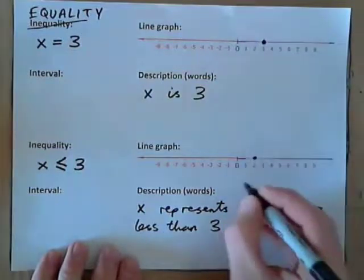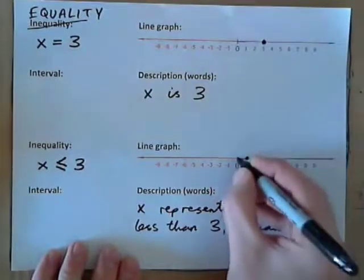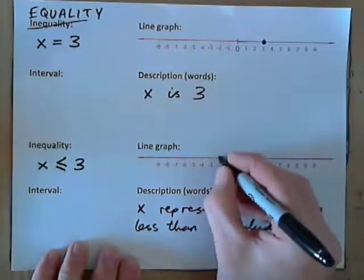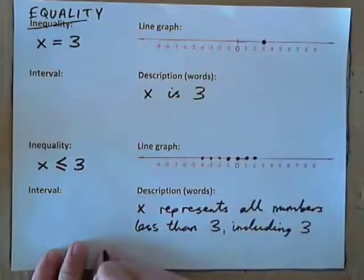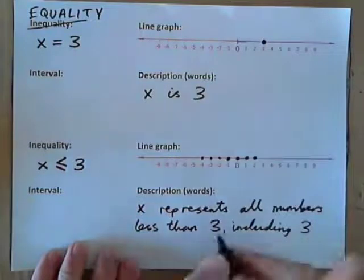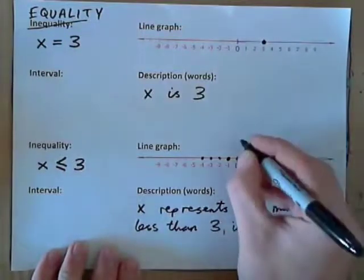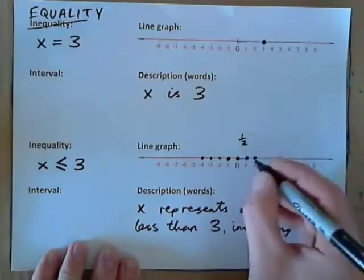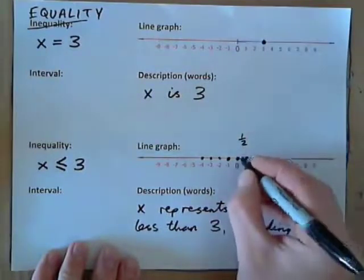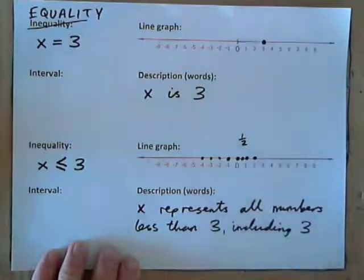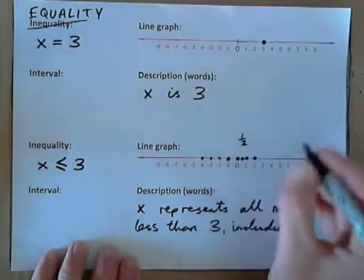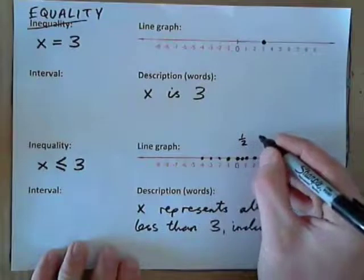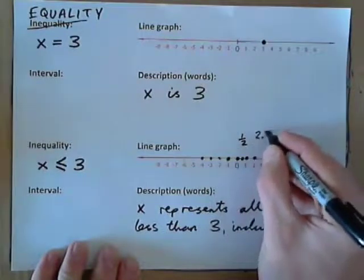x represents 2, and x represents 1, x represents 0, x represents negative 1, negative 2, negative 3, negative 4 — all these numbers. Does x represent also 1 half? Well, 1 half is less than 3, so yes it does. Does x represent, let's say, 2.9?